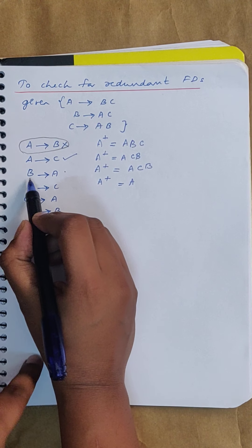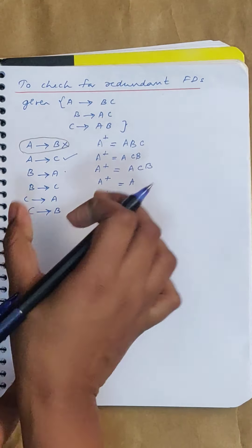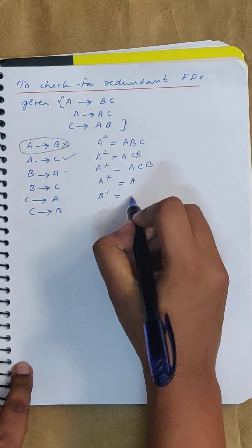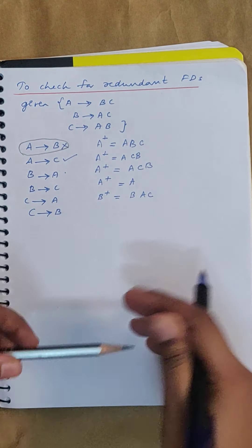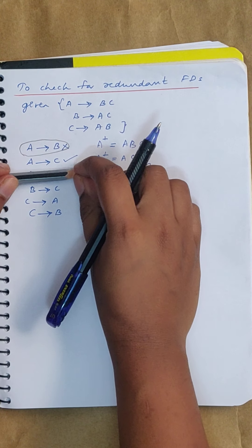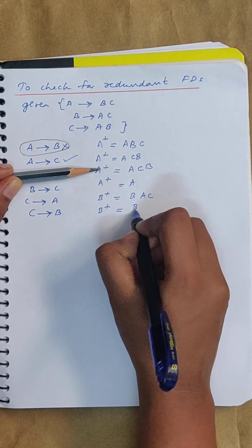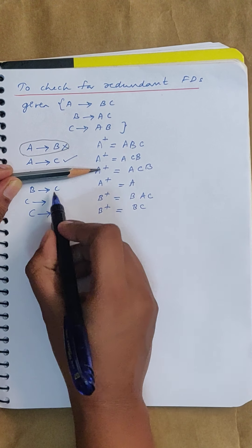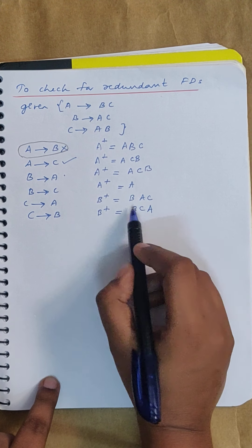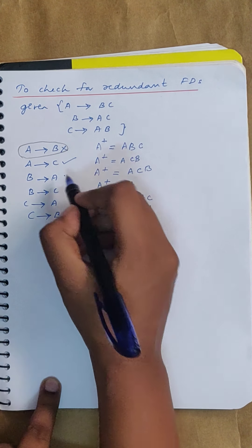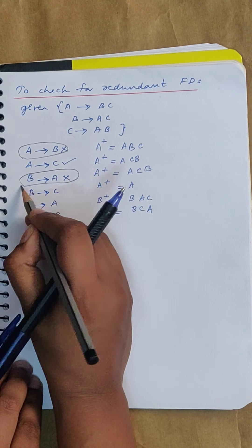Similarly, check if B→A is redundant. Find B closure including B→A: you get B, A, then from A→C you get C — {B, A, C}. Now check without B→A: you get B, then from B→C you get C, then from C→A you get A — {B, C, A}. You still get all attributes, so B→A is also redundant and is removed from the set.